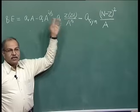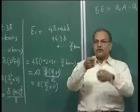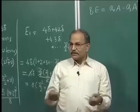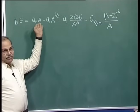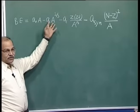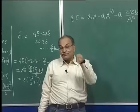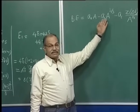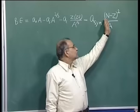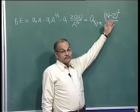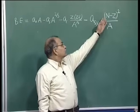So now we have four terms. The volume term is positive from nuclear attraction. We subtract the surface term because surface nucleons find fewer neighbors. We subtract the Coulomb term for proton-proton repulsion. And we subtract the asymmetry term coming from the Pauli exclusion principle and discrete energy levels for nucleons inside the nucleus.